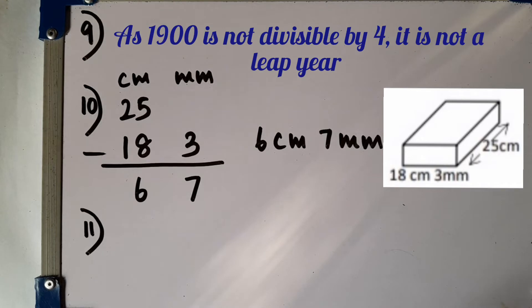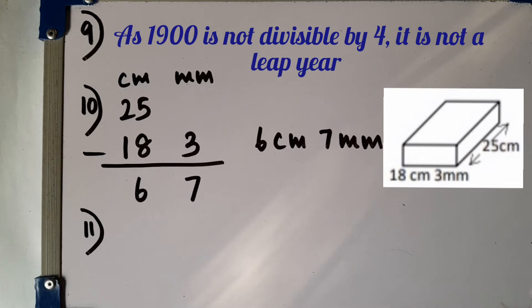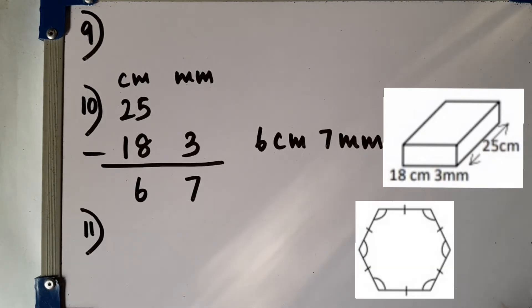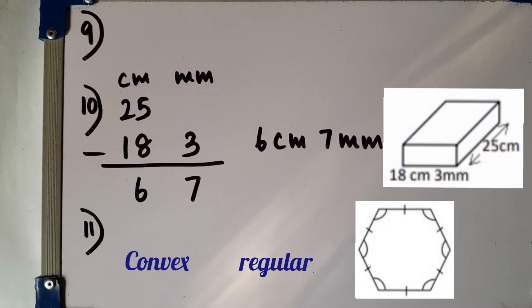Question number 11. Underline the correct answer. The diagram shows a convex, regular hexagon. That is the answer for that.